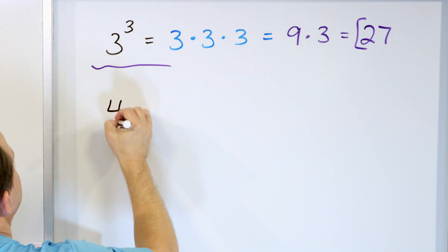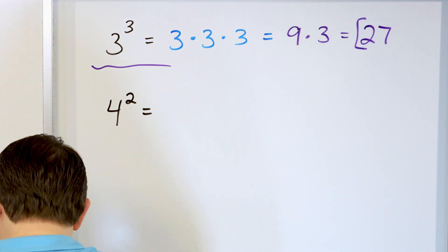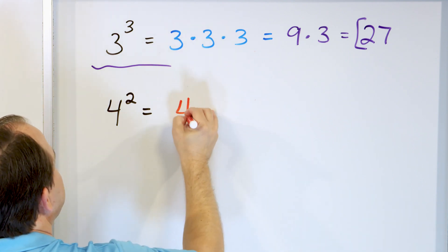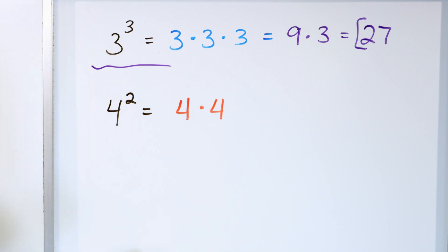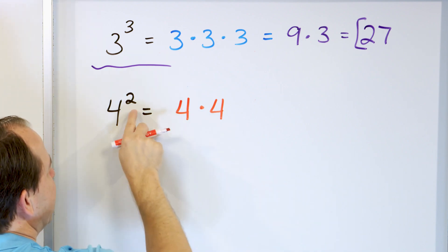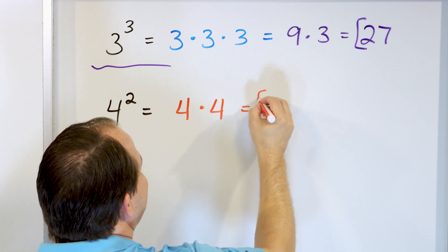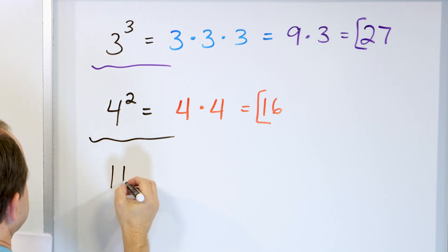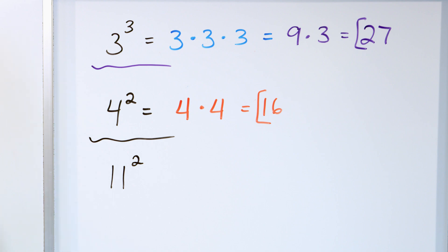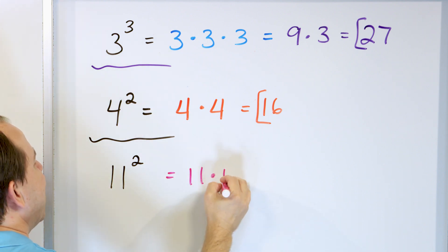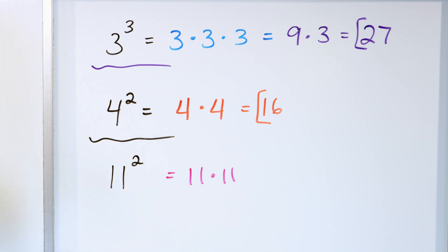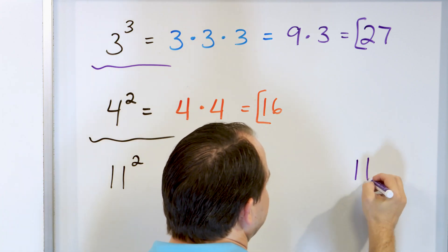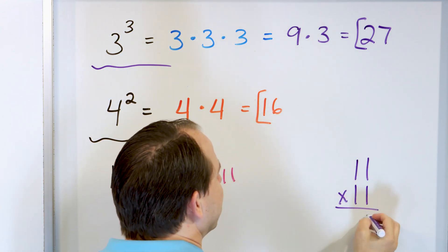Take a look at 4 to the power of 2. It means we take the base 4 and multiply it by itself. 4 times 4 is 16, so the answer to that problem is 16. Once you get the hang of exponents, they're actually quite easy. What about 11 to the power of 2? 11 to the power of 2 means we take the 11 and multiply it by itself — we have two of them because we're squaring it.